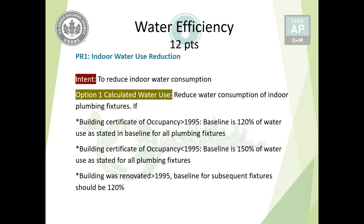Back when the buildings were constructed, the codes or the use of water were not that stringent. So they are giving a flexibility that if the building was occupied after 1995, you have 20% more flexibility, and if it was before 1995, you have 50% more flexibility from the standard baseline. Only the portion that is renovated after 1995 has to follow the 120% baseline, and the one that is not renovated will follow the 150% baseline.